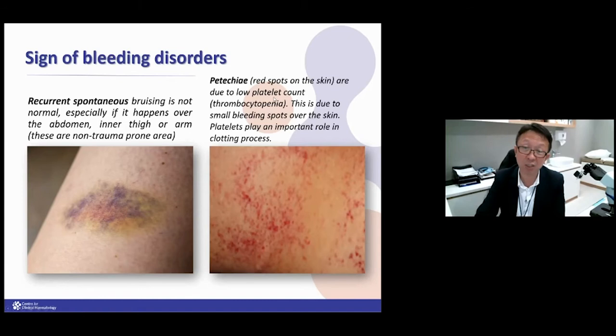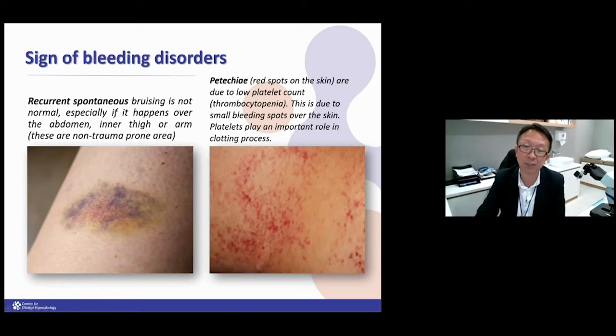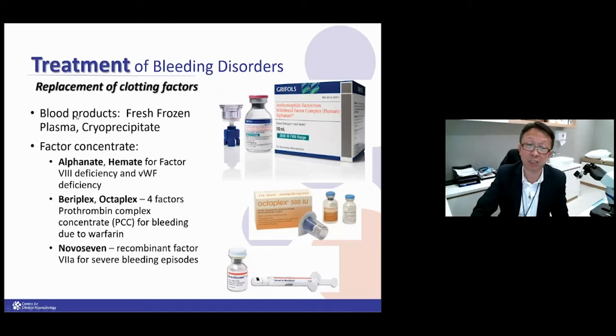Other symptoms include petechiae, which are usually due to low platelet count — I'll touch on that later. The treatment for bleeding disorder due to low clotting factors is to replace them. We give blood products like fresh frozen plasma, cryoprecipitate, or factor concentrates like alphanate, Beriplex, or NovoSeven — all available depending on which type of clotting factor is lacking.